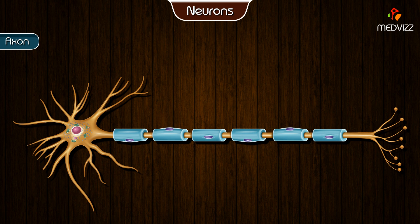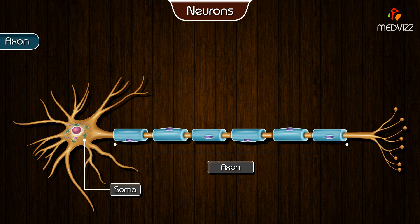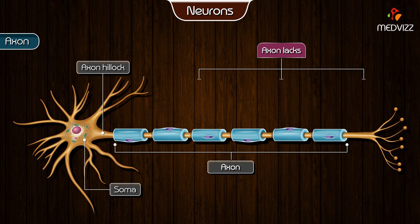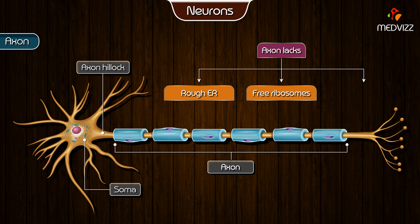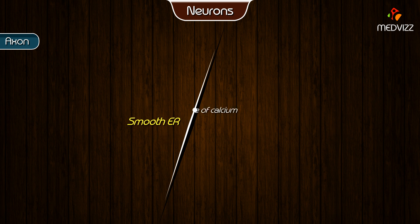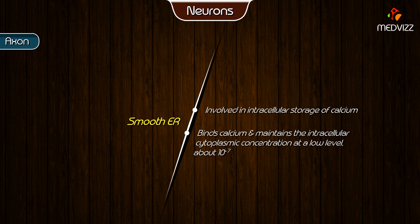The first part of the axon is known as the initial segment and arises from the soma in a specialized region called the axon hillock. The axon differs from the soma and proximal dendrites in that it lacks rough endoplasmic reticulum, free ribosomes, and a Golgi apparatus. The smooth endoplasmic reticulum is involved in the intracellular storage of calcium, binding calcium and maintaining the intracellular cytoplasmic concentration at a low level of about 10 to the power of minus 7.